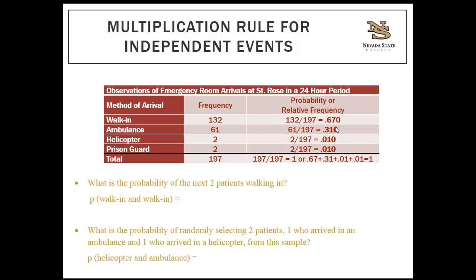This is much different from the probability of arriving in a helicopter or an ambulance, which was 0.32 in a previous example. It's far less likely that you'll have two random patients — one arriving by ambulance and one by helicopter — than to say the next person arriving could have come by ambulance or helicopter. The 'or' probability and 'and' probability are totally different.